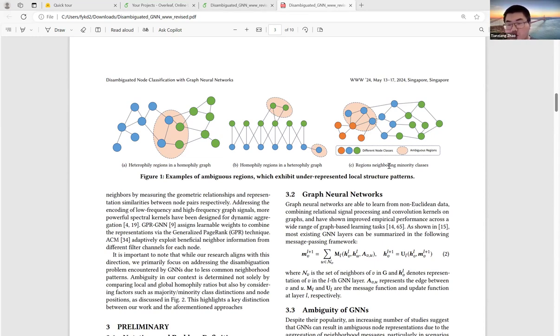Or most essentially, those regions that show a minority neighborhood class distribution, like nodes on the boundary between minority and majority node classes, as in this example.